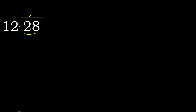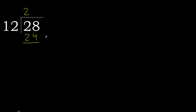12 multiplied by 3 is 36 — 36 is greater, so that's too big. 12 multiplied by 2 is 24 — 24 is not greater, so we use 2. Subtract: 28 minus 24 gives remainder 4.